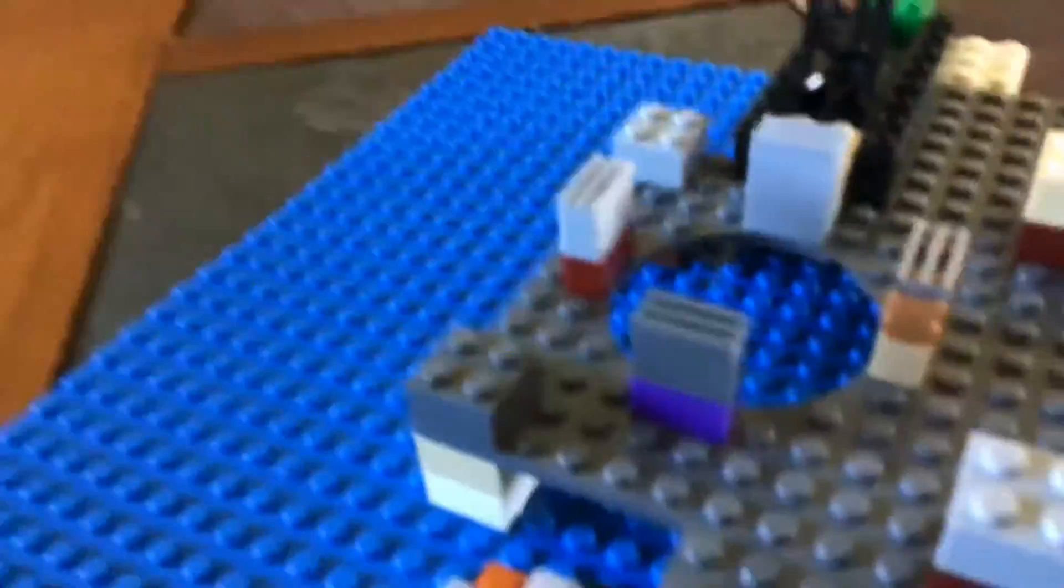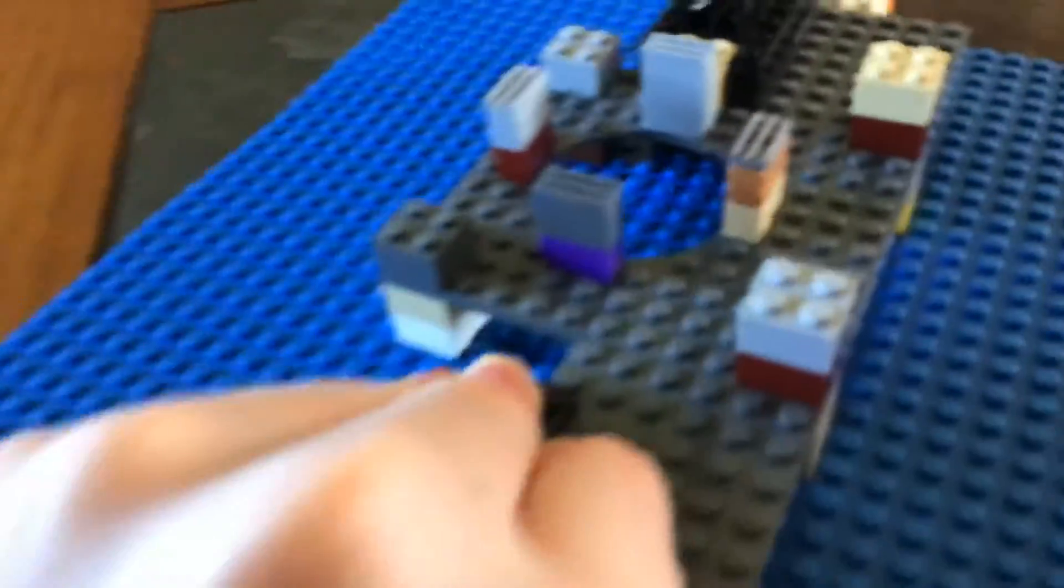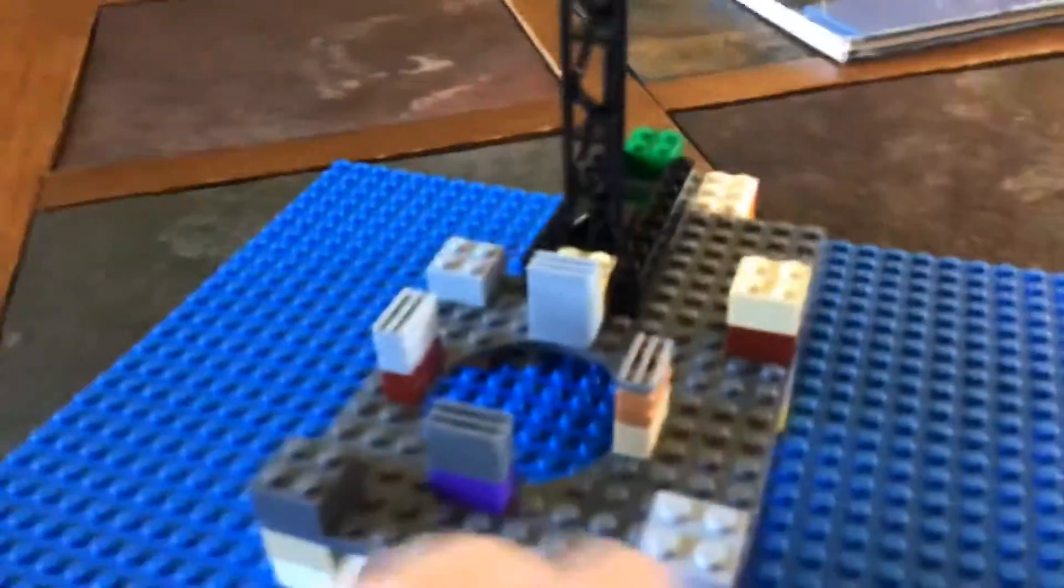Next, you're going to need this base plate, which you can only get in the LEGO Dimensions Starter Pack. Now we're going to take this off for a little bit and take a look at the support, at the superstructure.